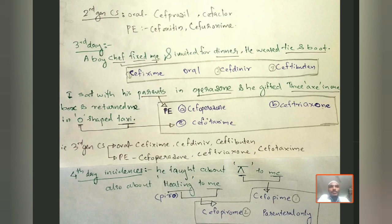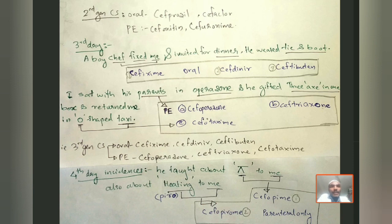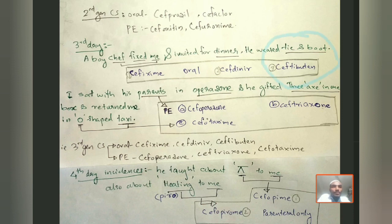The climax is on the third day: a boy chef fixed her and invited her for dinner, wearing a tie and a boot. From the mnemonic — 'chef fixed me' gives cefixime (oral), 'chef dinner' gives cefdinir (oral), and 'tie and boot' gives ceftibuten (oral). These are the third generation oral cephalosporins: cefixime, cefdinir, and ceftibuten.